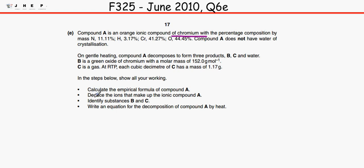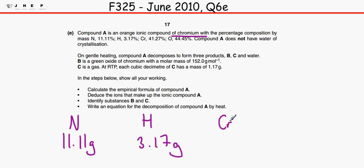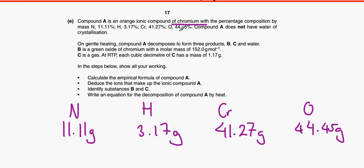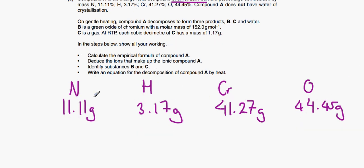First thing we've got to do is to calculate the empirical formula of this compound. Since the values are in percentages, let's imagine that compound A weighed 100 grams. So for each 100 grams of compound A: nitrogen is 11.11 grams, hydrogen is 3.17 grams, chromium is 41.27 grams, and oxygen is 44.45 grams. As you can see, if we add them all up together it makes 100 grams.